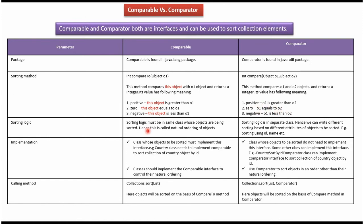If we are using Comparable, then the sorting logic should be in the same class whose objects are being sorted, so it is called natural ordering of objects. If we are using Comparator, then we can write the sorting logic in a separate class, so we can write different sorting logic based on different attributes of the objects to be sorted.